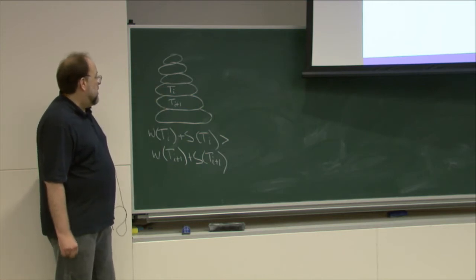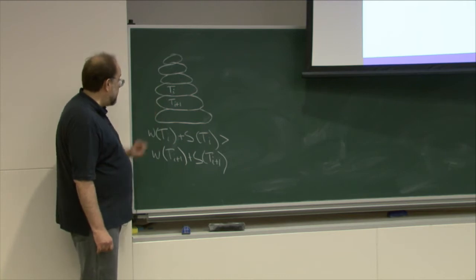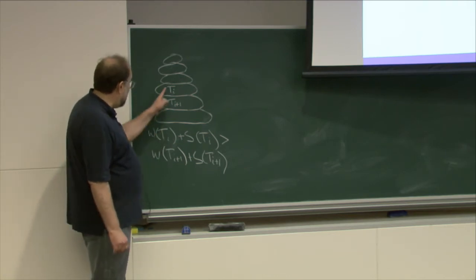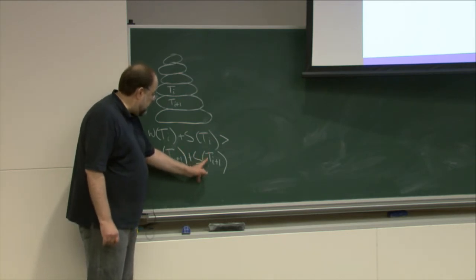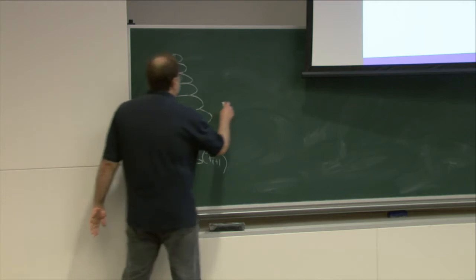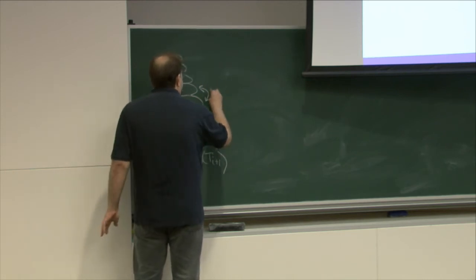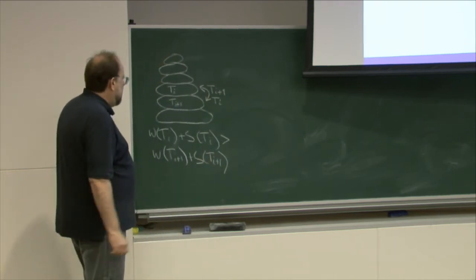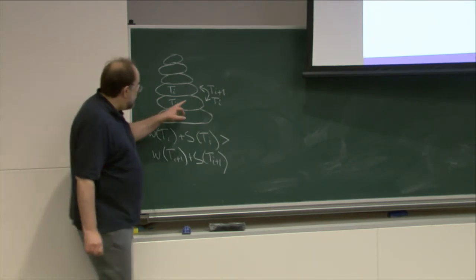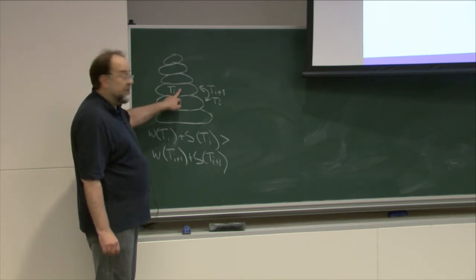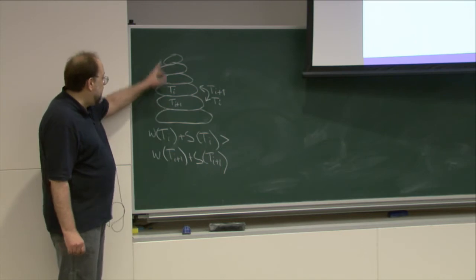As long as we can show that we can swap two adjacent turtles, we are fine. Assume that we have an inversion: the weight of turtle Ti plus its strength is larger than the weight plus strength of the turtle below. We claim that if we swap these two turtles — put Ti here and Ti+1 on top — the tower will still be correct in the sense that no turtle will get cracked. Since Ti+1 goes up on top, it will see only smaller weight, so Ti+1 definitely will not crack if this was a legitimate tower.